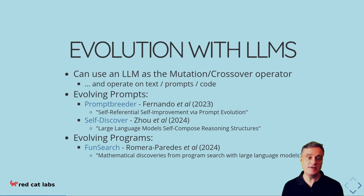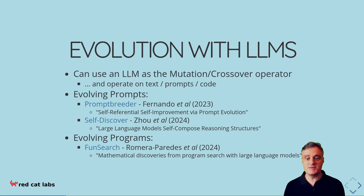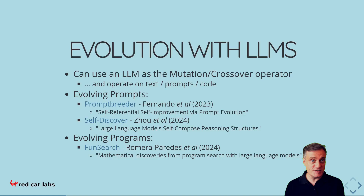One of the key ideas here is to prevent population collapse. This occurs where individuals in a population all converge on the same solution, and that prevents evolution from having its true power, since you're then reduced to just mutating around a common individual, whereas the true power of evolution involves mixing diverse elements from different individuals to capture the power of crossover. In the last video, we saw evolution starting with LLMs, and in particular, evolving prompts with Prompt Breeder and how that was used in Self-Discover.